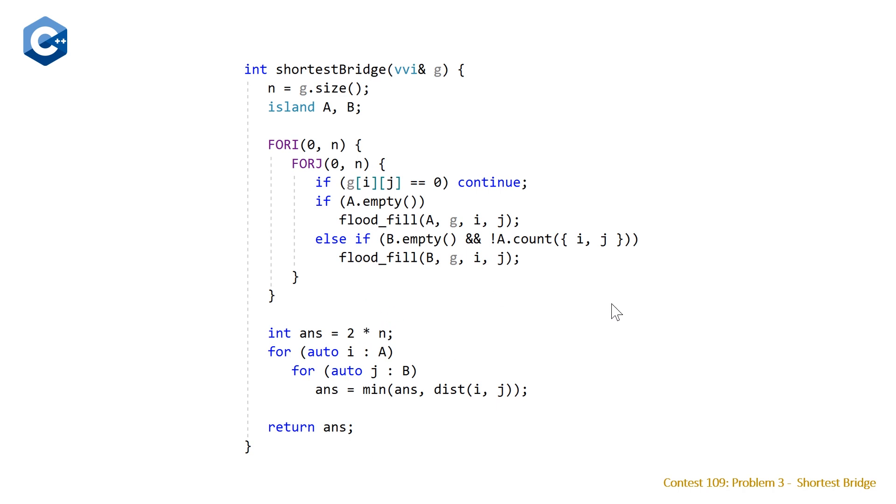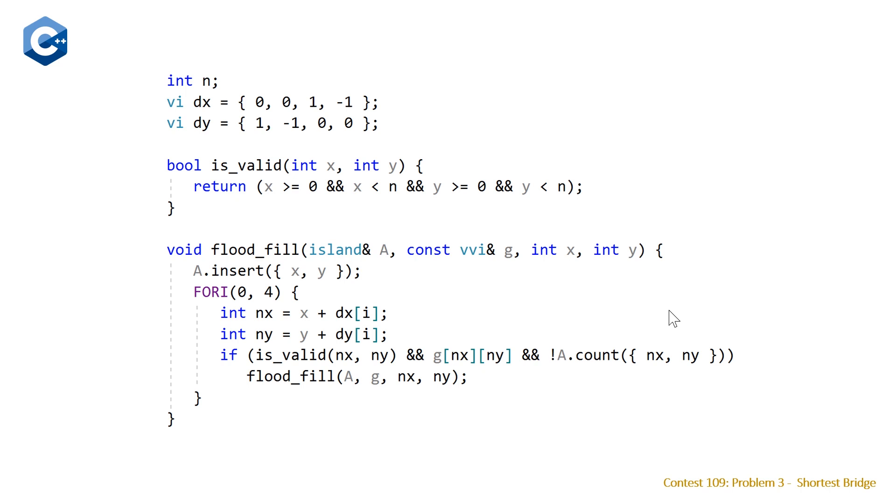Let's quickly take a look at our flood fill function. Here's some boilerplate that you need: the delta x and the delta y when you're exploring recursively. Then we have this is_valid function that takes two coordinates and it's just making sure that we're not exploring outside of our 2D grid.